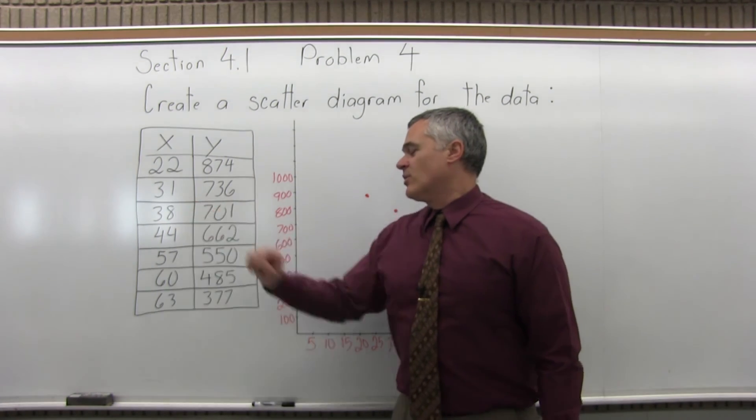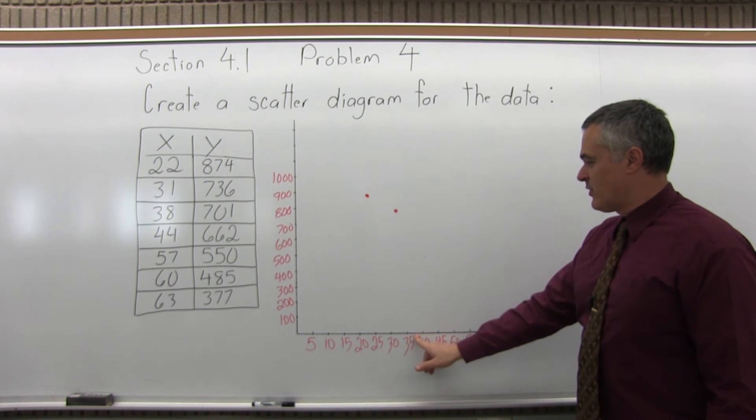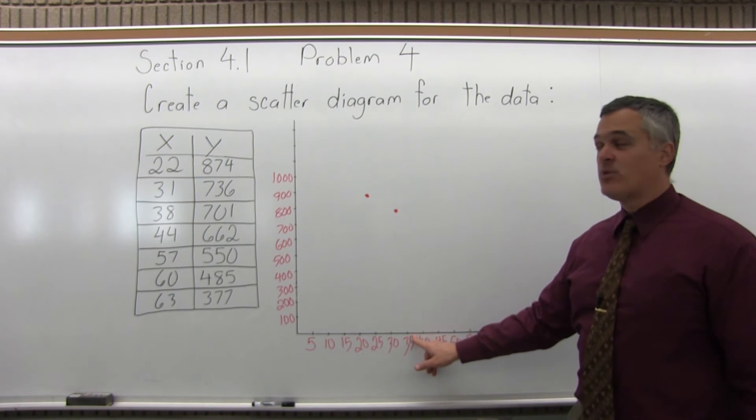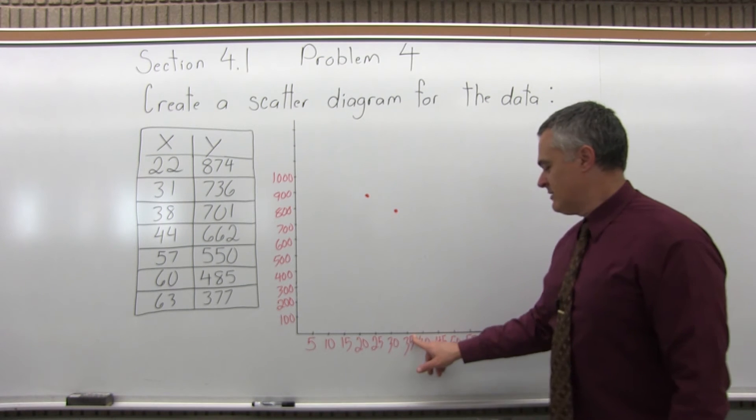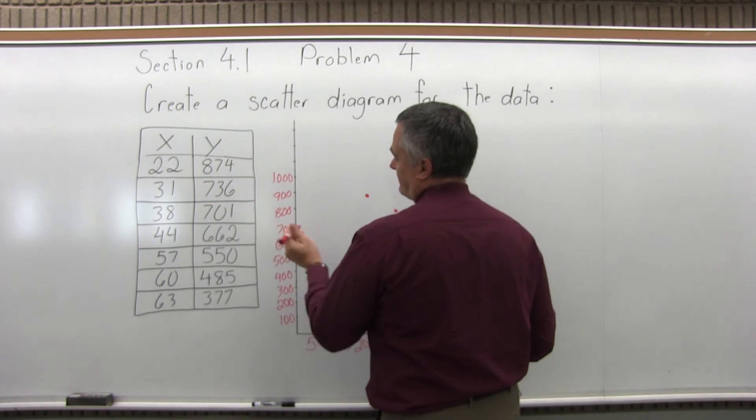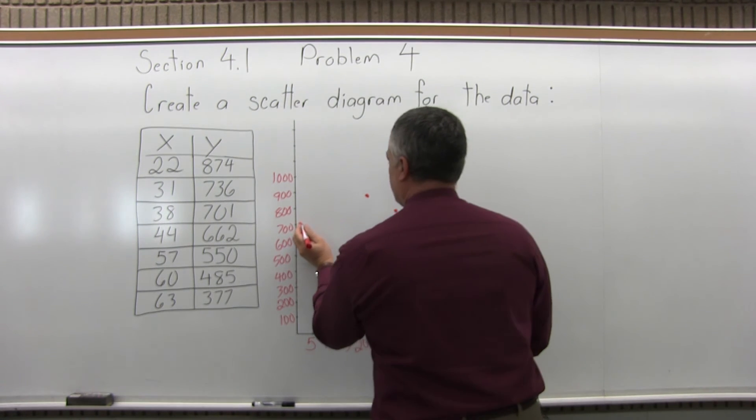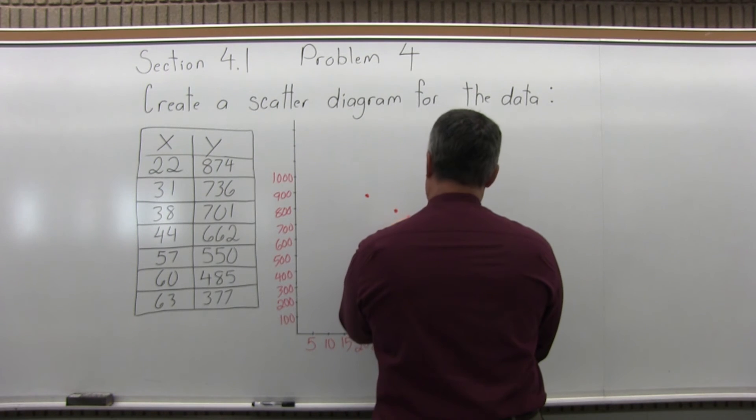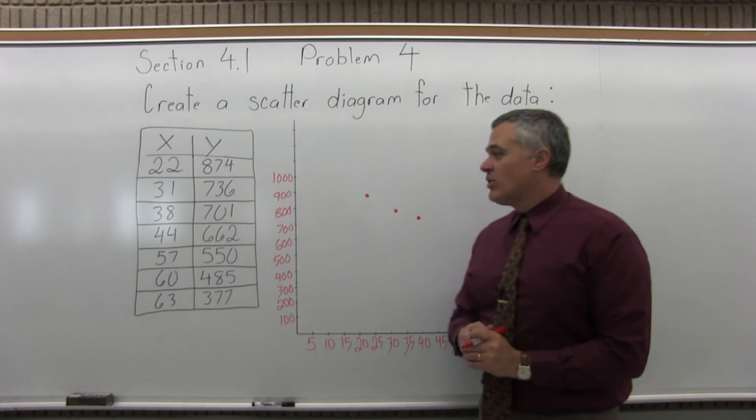The next one, X is 38, Y is 701. So over 38, again, I don't have 38 exactly, so find the 40. Right between 35 and 40 is 37.5. 38 is a very tiny bit more than 37.5. And for the height 701, again, by eye, it's going to look like 700. So let's follow out that height of 700 and line it up with what looks to me the 38. So we have the first three points plotted now.